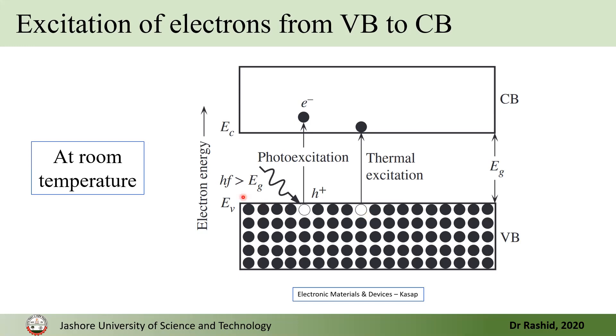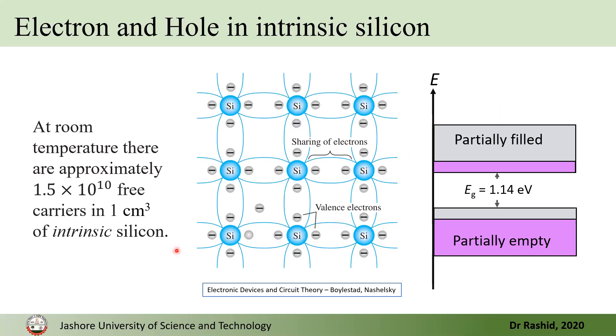In case of photon, we need a photon with energies higher than this band gap or energy gap. Now, for the silicon at room temperature, in every centimeter cube, there are about 15 billion free electrons or free carriers.